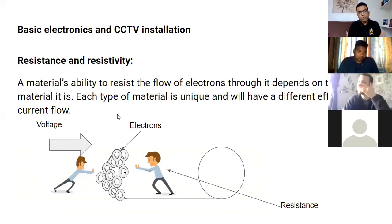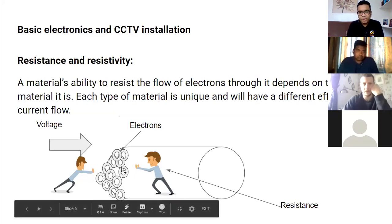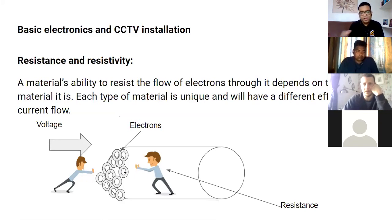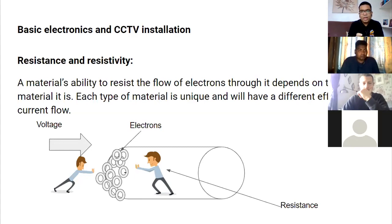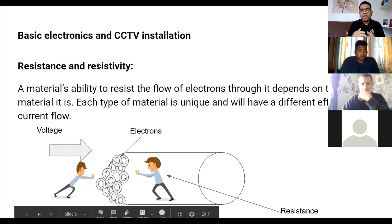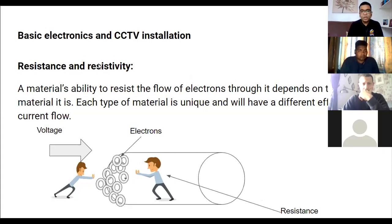Anything that works against the flow of electricity is known as resistance. Imagine electrons passing through a pipe — anything that resists that flow is resistance. The first factor affecting resistance is the material. There's a difference between copper, aluminium, and silver; the material you use determines the resistance level. In electronic security applications — intruder alarm, fire alarm, CCTV, access control — we mostly use copper cable.